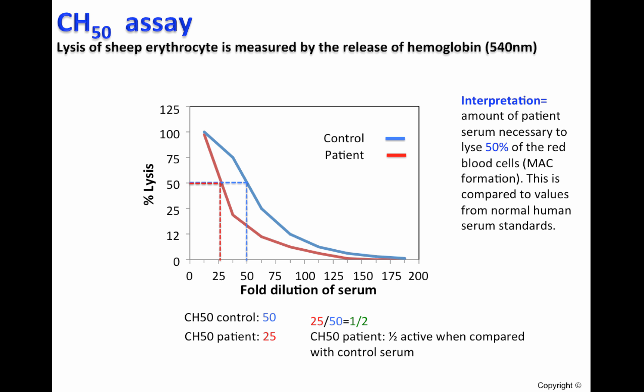In summary, the CH50 is the amount of patient serum necessary to lyse 50% of red blood cells. This is compared to values from normal human serum.